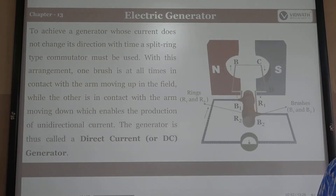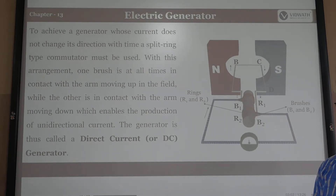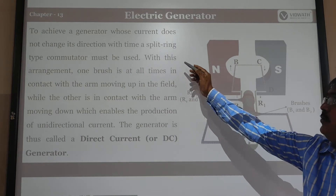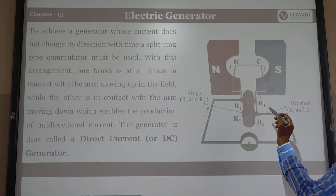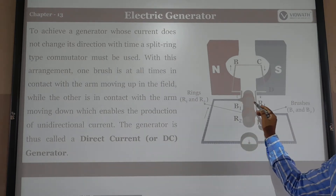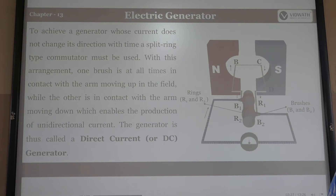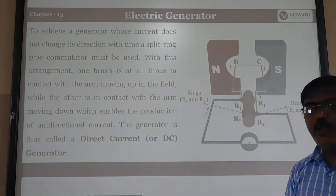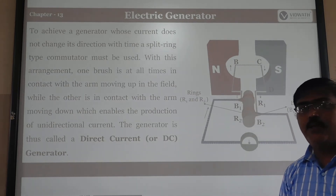To make a generator where the current does not change direction, a split-ring type commutator must be used. With this arrangement, one brush is at all times in contact with the arm moving up in the field, while the other is in contact with the arm moving down. Each arm produces a unidirectional current. This generator is called a direct current, or DC generator. In AC current, the direction changes every half rotation; in DC current, the current flows in only one direction.